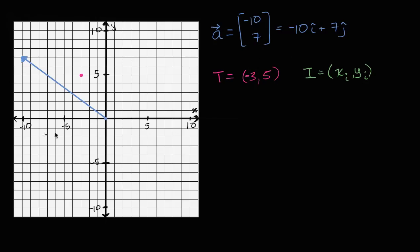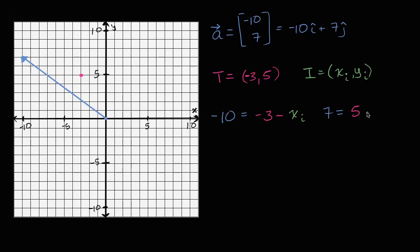So the x component, negative 10, equals your terminal x minus your initial x — that's negative three minus x_i. And the y component, seven, equals your change in y — your terminal y, five, minus your initial y, y_i. From these two equations we can just solve for x_i and y_i.